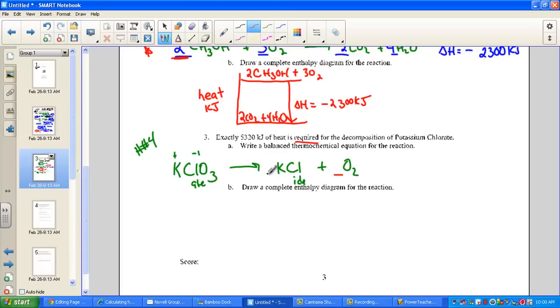We still need to balance. We'll turn our oxygens both into sixes and double the KCl. The ratio of 2 to 2 to 3 is our balanced equation. But now let's turn it into a thermochemical equation. If heat is being required, we have to input it. That is representing an endothermic value. We have to input 5320 kilojoules of heat to get this reaction to go.